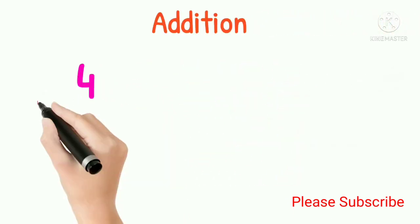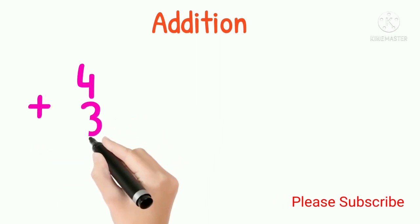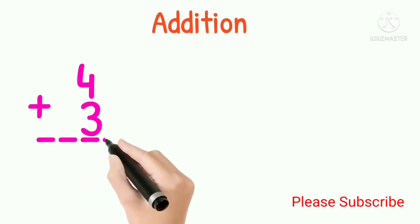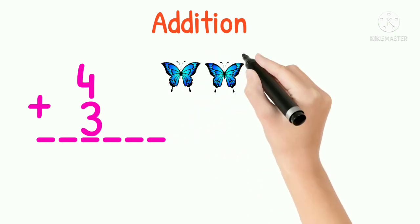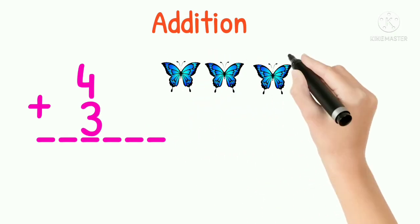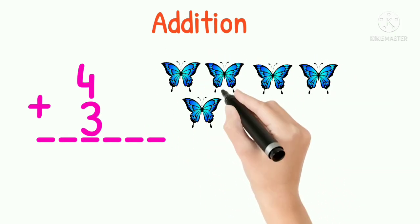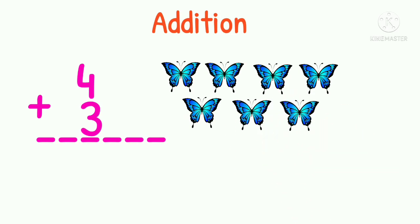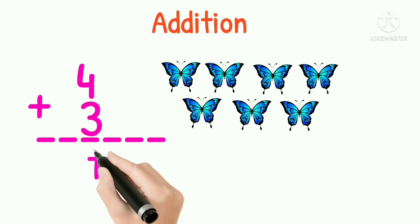4 plus 3 equal to 1, 2, 3, 4, 5, 6, 7. Answer will be 7.